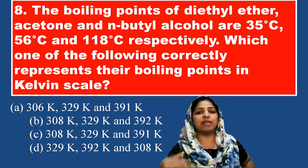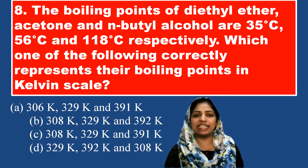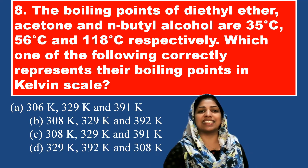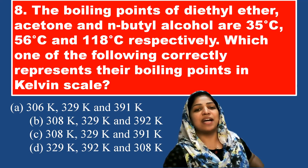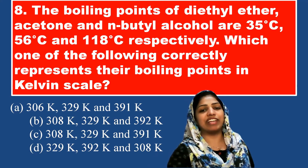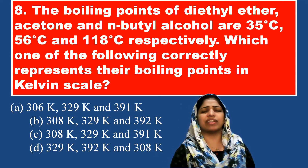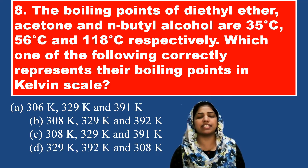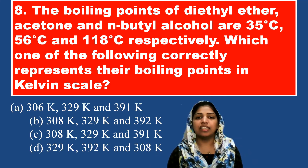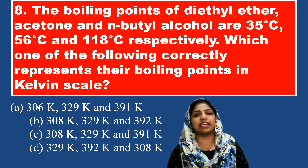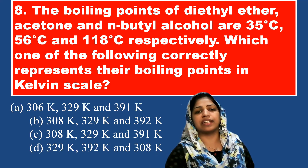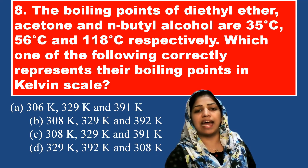So the values are 308 K, 329 K, and 391 K. The correct answer is option B. The rule is simple: to convert degrees Celsius to Kelvin, add 273.